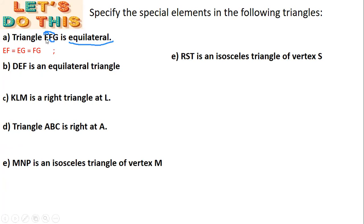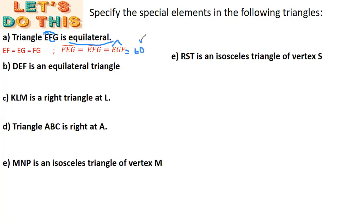Now the equal angles for triangle EFG. At vertex E the angle is FEG; at vertex F the angle is EFG; at vertex G the angle is EGF. These three angles are equal, and each one measures 60 degrees. Why? Because in an equilateral triangle, each angle measures 60 degrees.